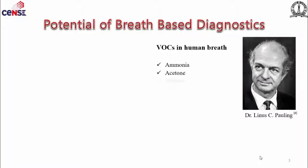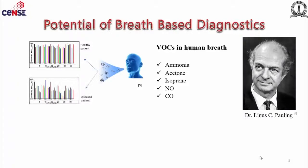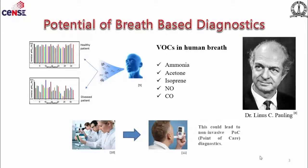Say ammonia, acetone, isoprene, to name a few. Our breath has a signature — a healthy person and a diseased person both have varying concentrations of these gases, so you can easily predict whether a person is healthy or diseased. Why can't we exploit this and make a handheld device where you just blow into a tube and get the reading right there? Skipping all the steps.